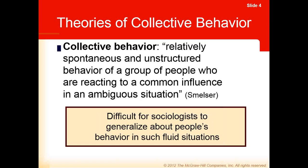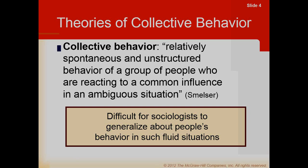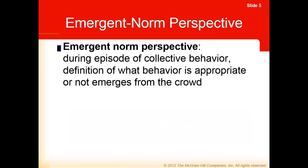In sociology, we're always trying to look for broad theories and results that we can generalize to a population. This becomes difficult when we're looking at collective behavior because there are so many different ways to respond, so many different options. The first one we're going to talk about is the emergent norm perspective as a way of trying to explain collective behavior. During collective behavior, the definition of what behavior is appropriate or not emerges from the crowd.